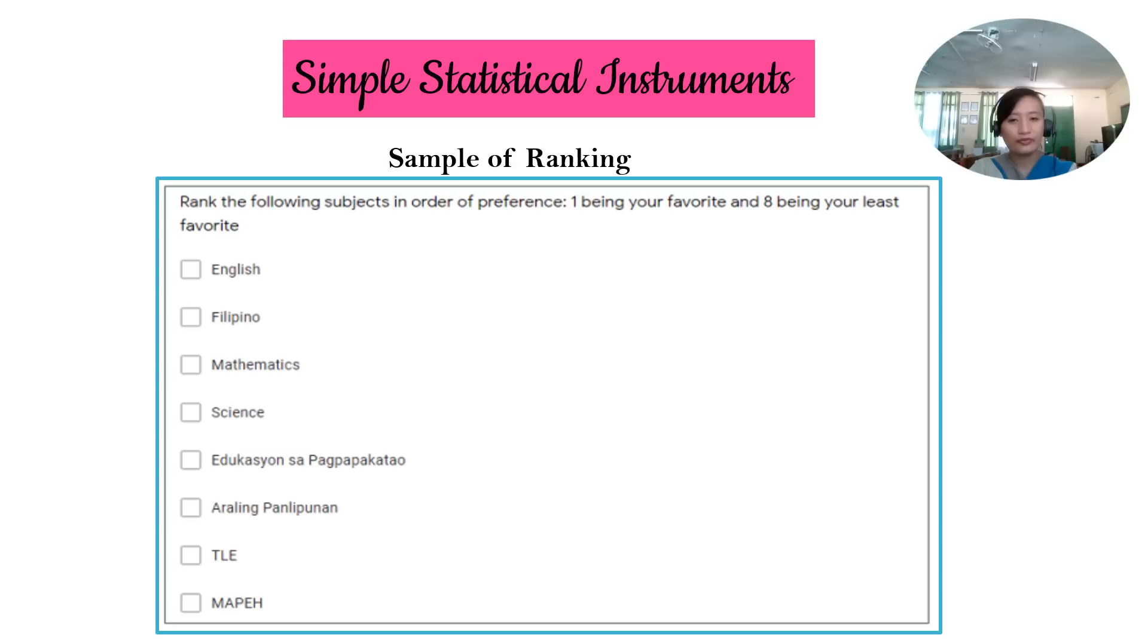For example, here is an example. Rank the following subjects in order of preference. One being your favorite and eight being your least favorite. So if your favorite subject is math, you just have to rank it as one, and then your next favorite, you rank it as two, and so on. So that is for the example of ranking.